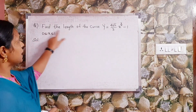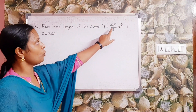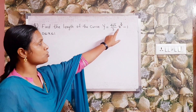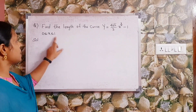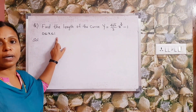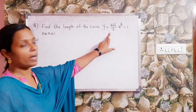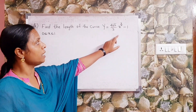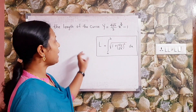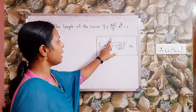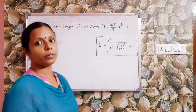First problem: find the length of the curve y = (4√2/3)·x^(3/2) − 1, for 0 ≤ x ≤ 1. We use the formula L = integral from a to b of √(1 + (dy/dx)²) dx. First, we find dy/dx.